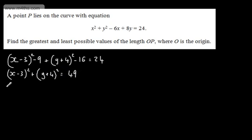So we can state that this is a circle. I'll call the centre C and the centre is going to be at 3 comma minus 4, and we've got a radius which will be the positive square root of 49, which is 7.